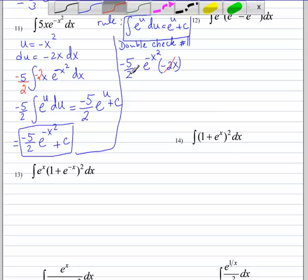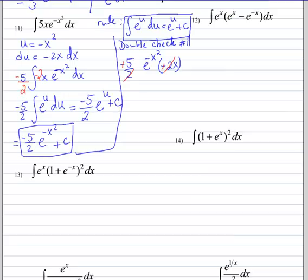So let's reduce. This cancels with that. Signs become positive. So the derivative is, in fact, 5x e to the negative x squared, which is our original question.